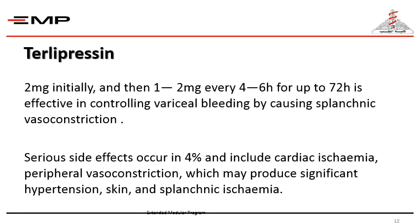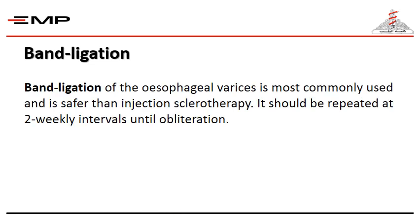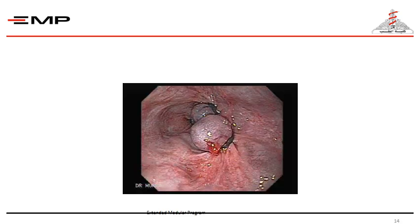Band ligation of the esophageal varices is the most commonly used method and is safer than injection sclerotherapy. It should be repeated at two-weekly intervals until obliteration of the varices occurs. This picture shows band ligation of varices — you can see how the band is placed around the varix.